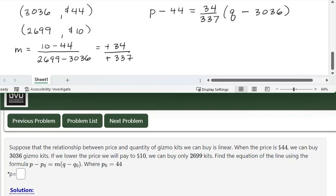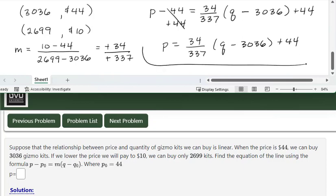And then in the answer they have it solved for p, so let's add 44 to both sides. p would be 34 over 337 times the quantity q minus 3,036, plus 44. No need to simplify. Thank you very much.